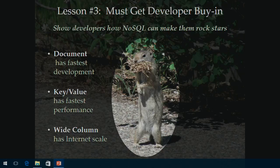Document databases have the fastest development times. Key-value databases just have a key and a blob — you have to do a lot more development work to compensate for the lack of indexes. MarkLogic has indexes on everything; key-value has one index. You're not as fast at development in key-value because you're writing lots of code. But it's really fast because the database is kind of simple — you just put a blob in with a key and it gives you a blob back.